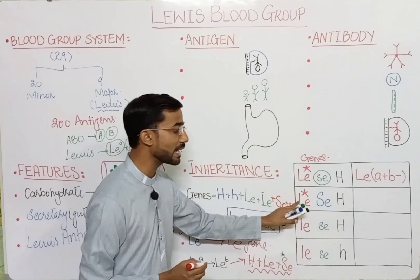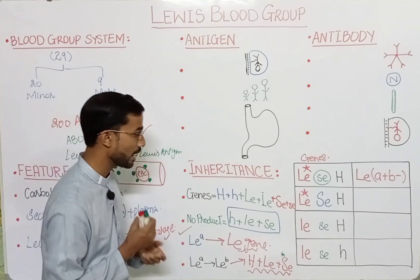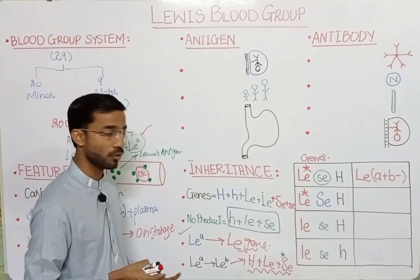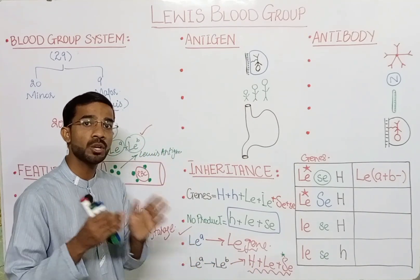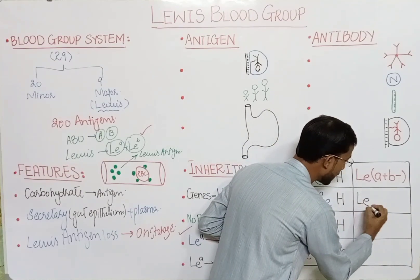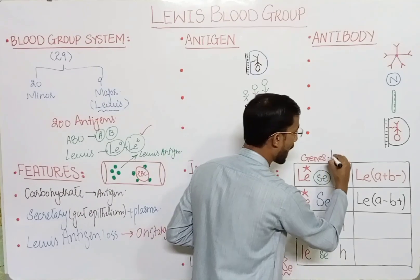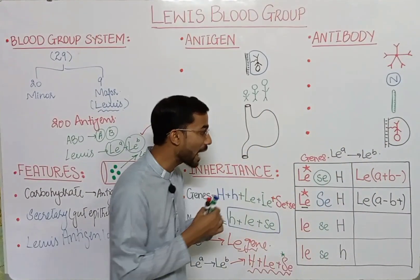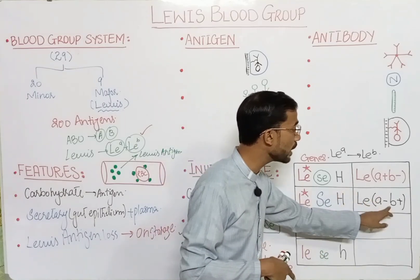In the next condition, if capital LE is present — LEa antigen is formed — and capital H, capital LE, and capital Se are all present, then rule number 4 is fulfilled. In that situation, LEa will convert into LEb. So all the LEa antigen converts and you will see LEb antigen expressed.